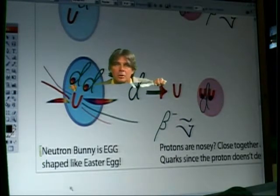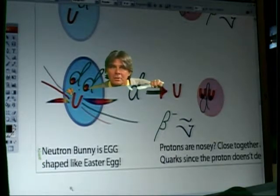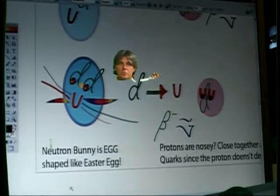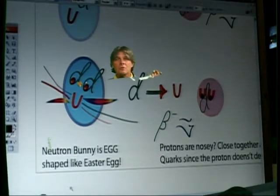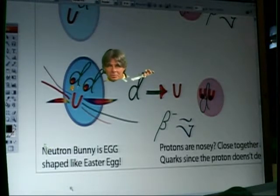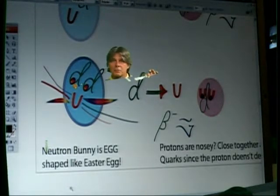It looks like an Easter egg. So if you remember, neutron bunnies — the eggs are made in the sun, neutrons are made in the sun. Looks like an Easter egg: neutrons.